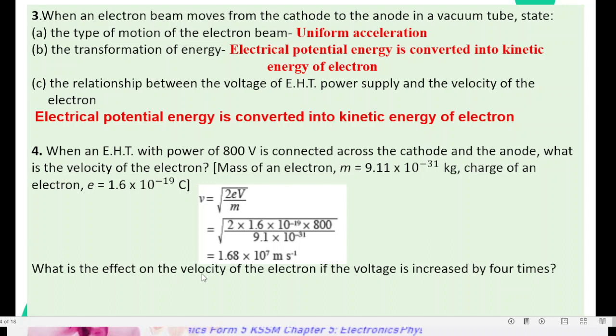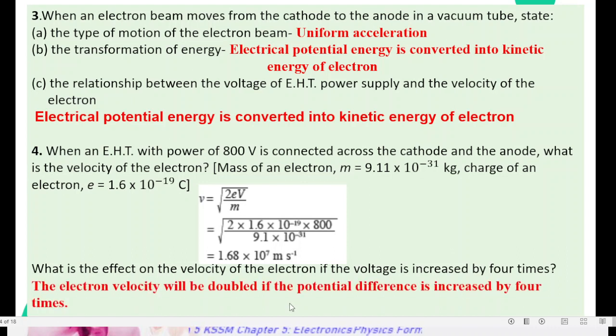What is the effect of velocity of the electrons in the voltage if the voltage is increased by 4 times? What is the effect on velocity of electrons if the voltage is increased by 4 times? The electron velocity will be double if potential difference is increased by 4 times.